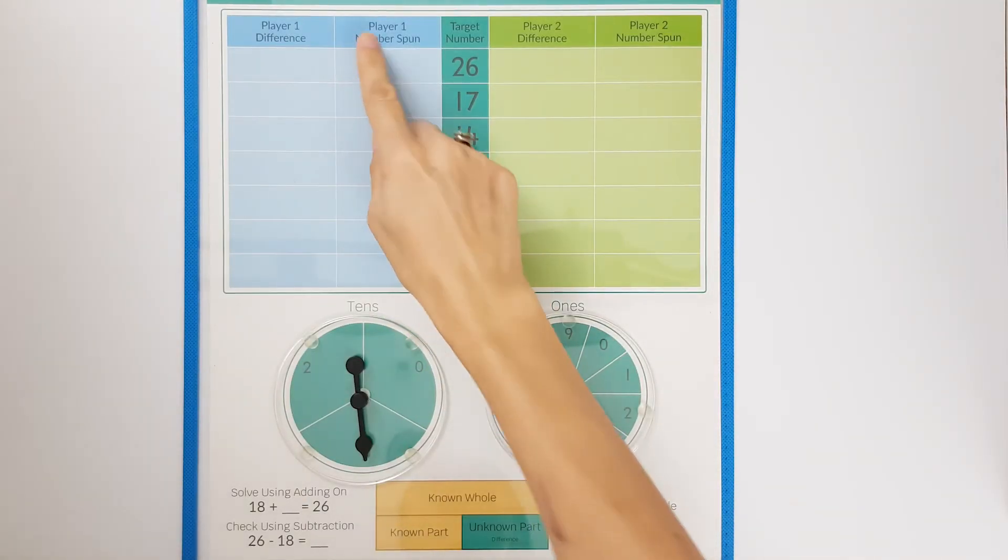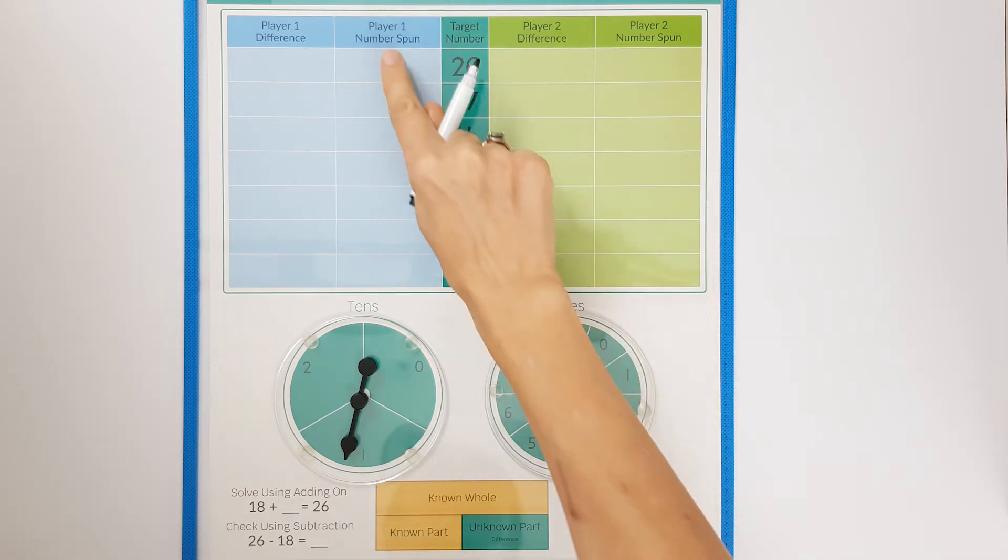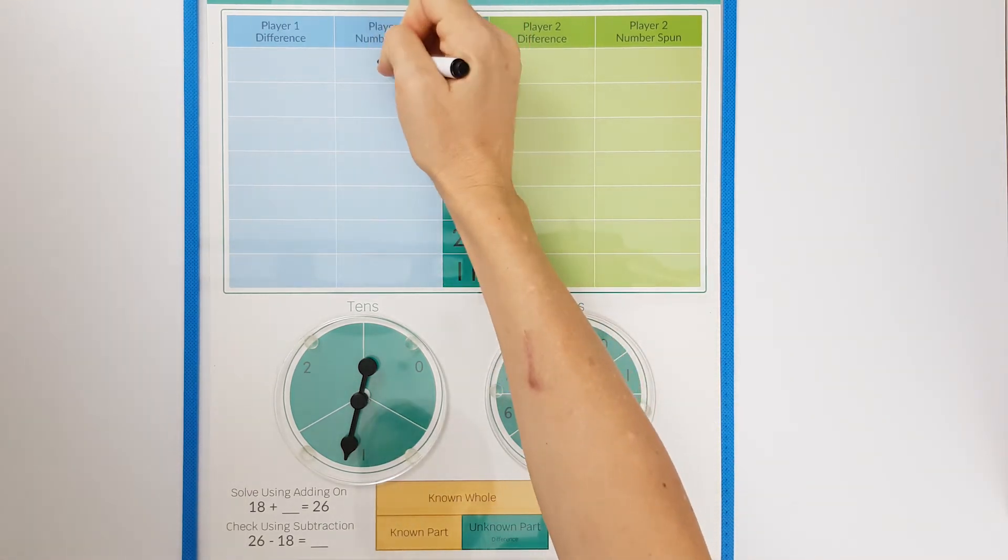Player one goes first. They flick the ten spinner and the one spinner and they say ten add two equals twelve and they record this in their number spun column.